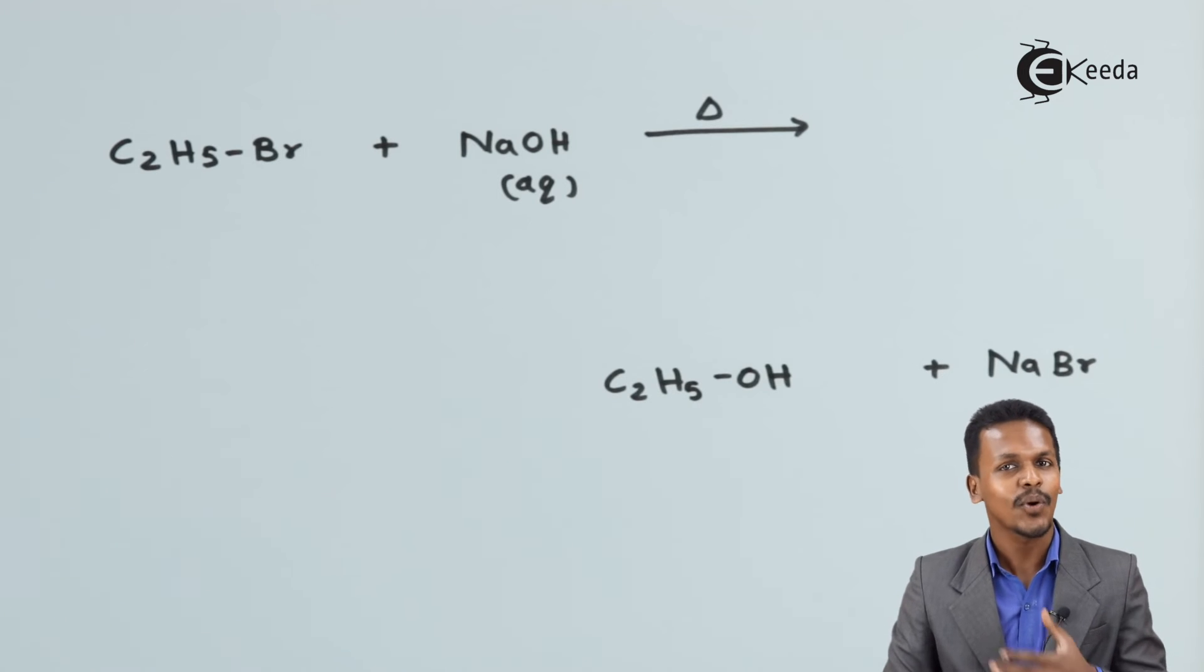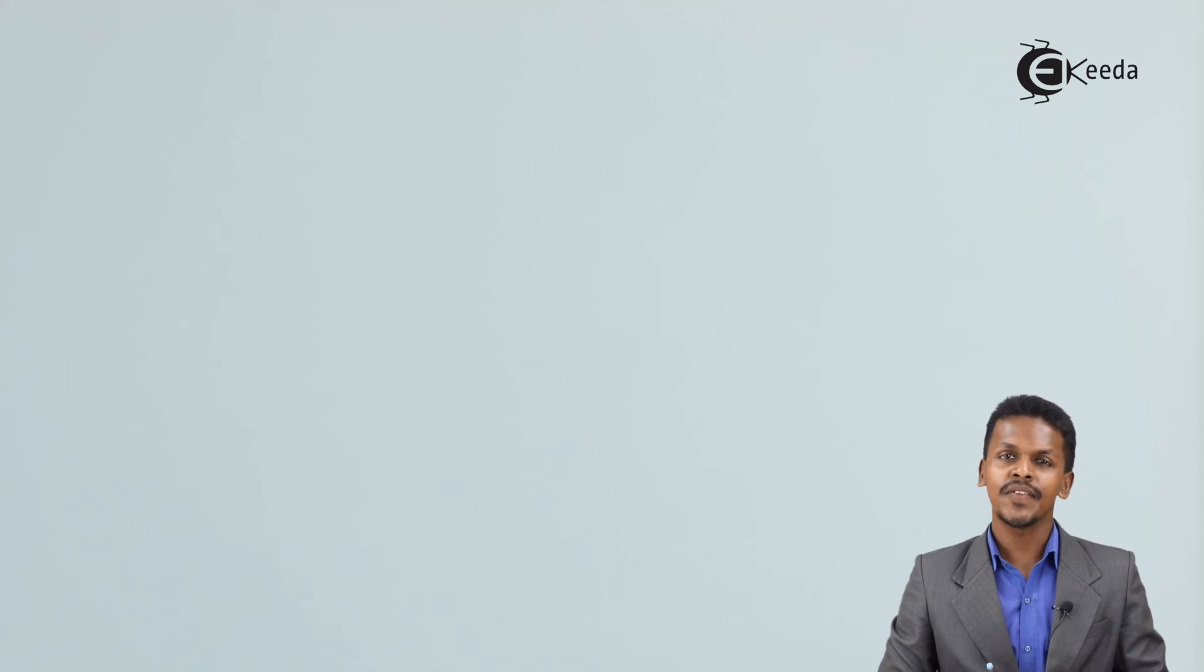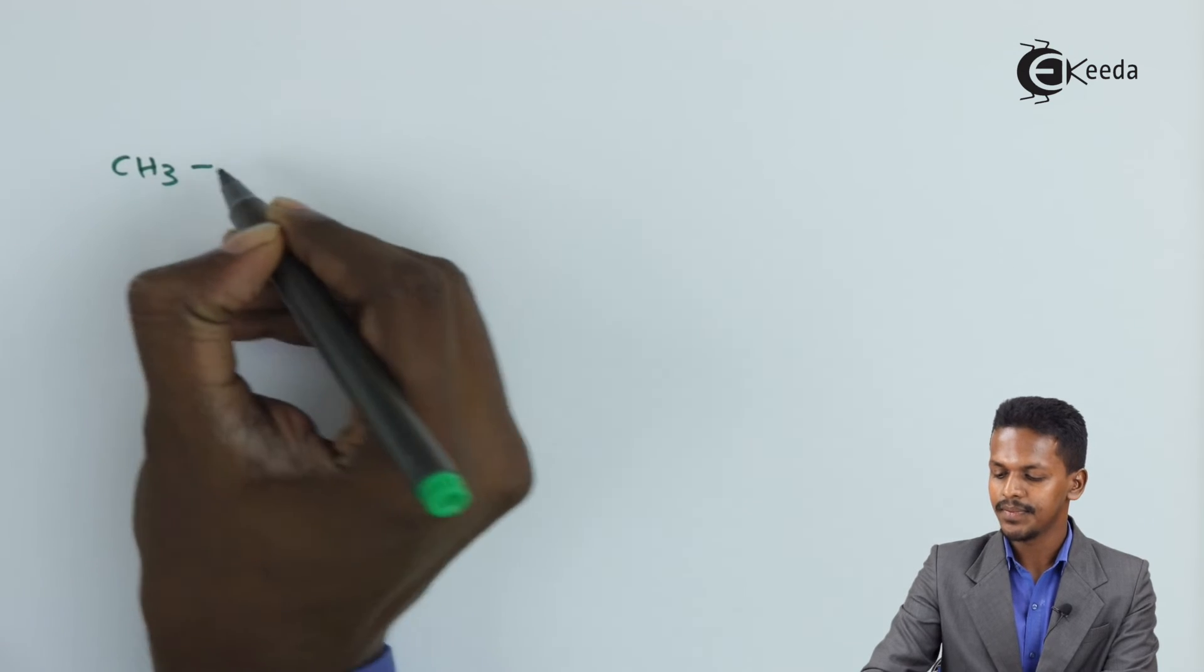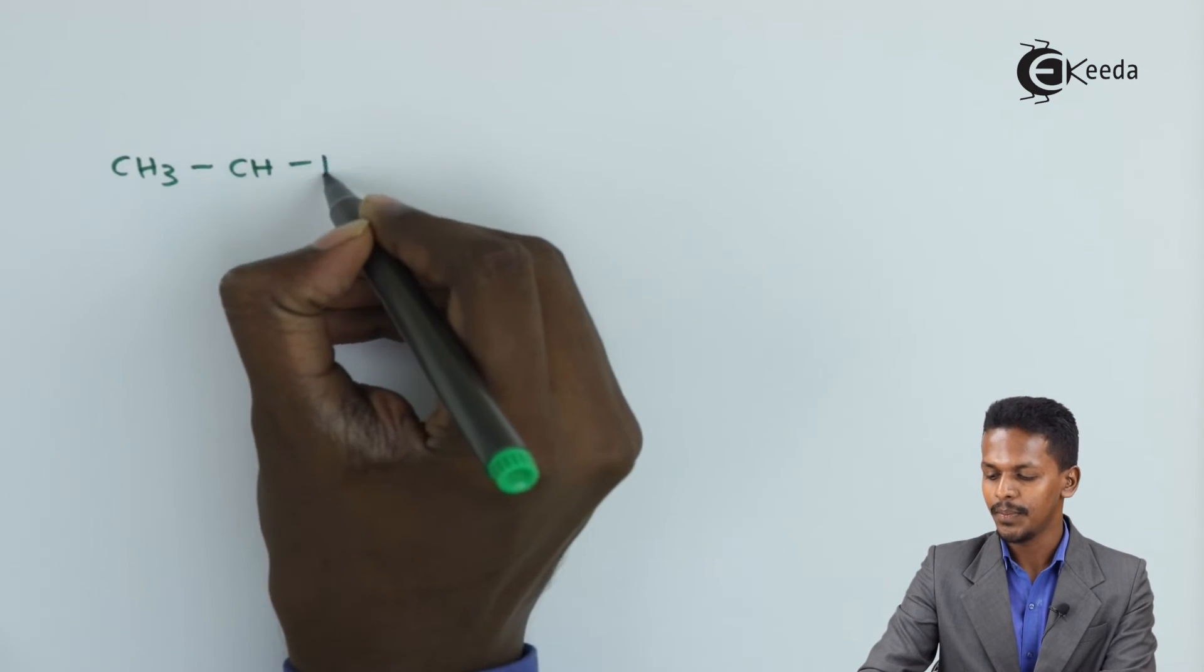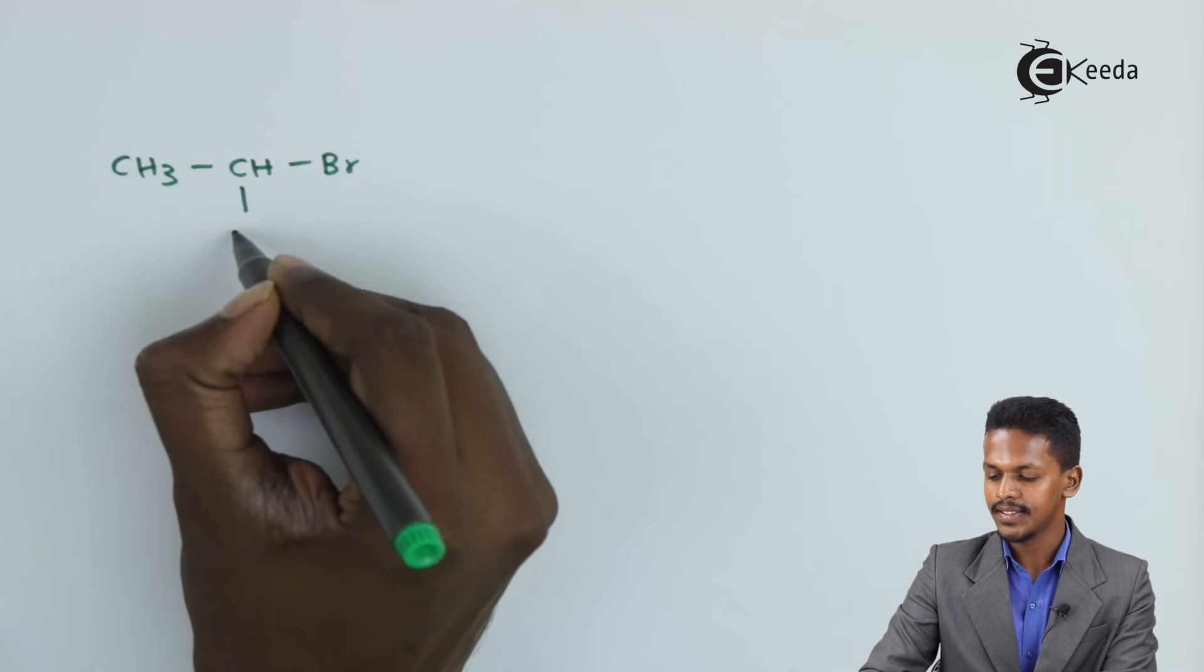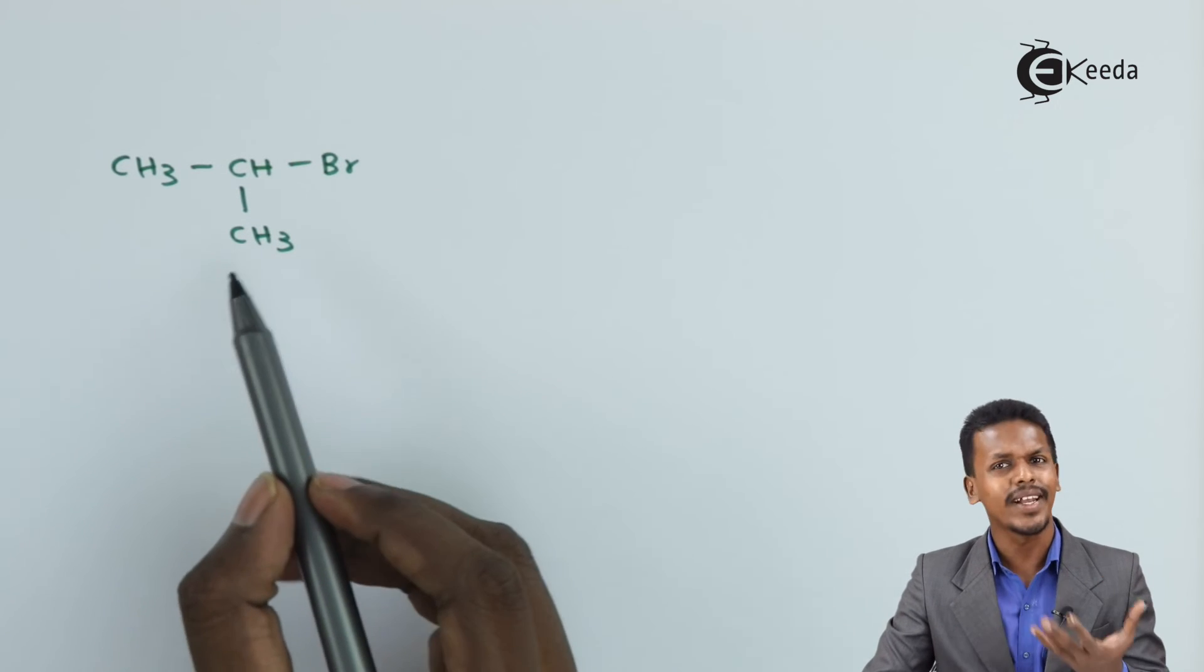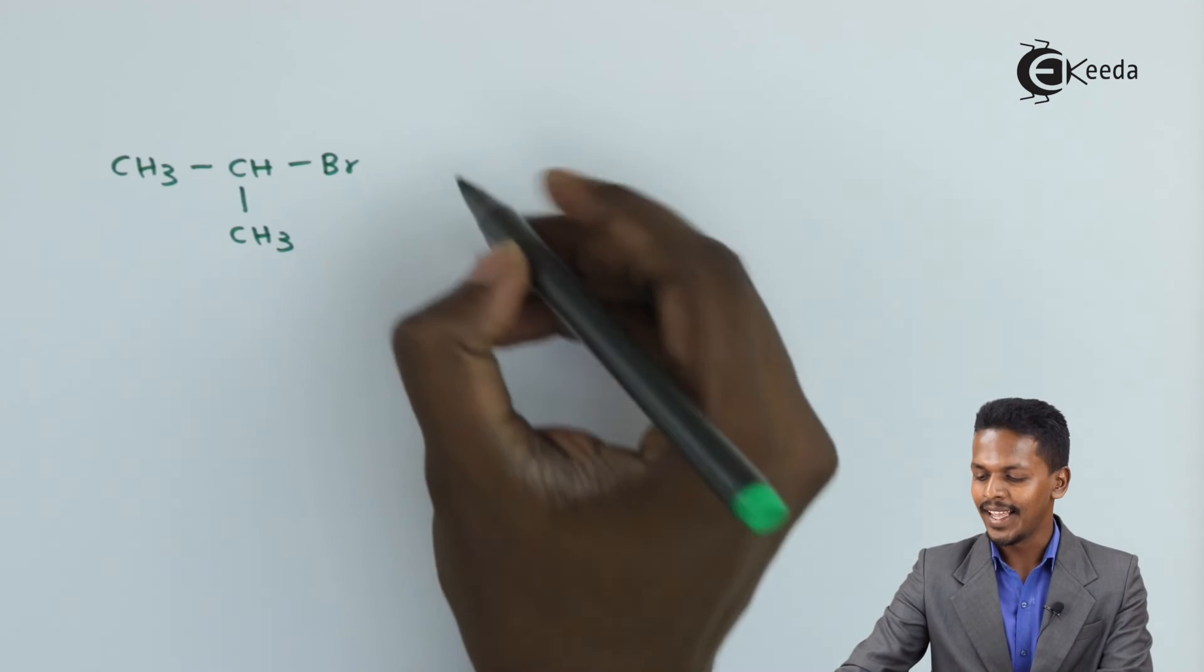Suppose I am considering a secondary alkyl halide, that is CH3-CHBr-CH3, which is commonly known as isopropyl bromide, or I could call it 2-bromopropane.